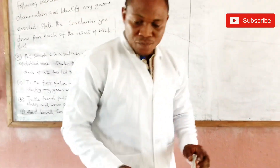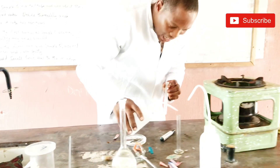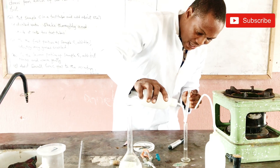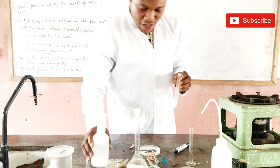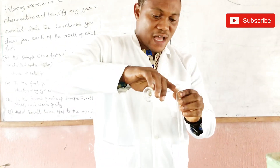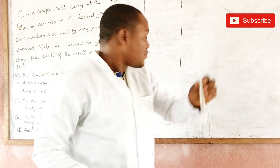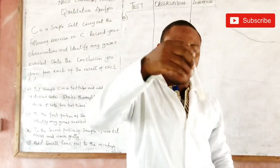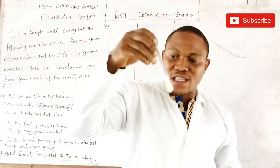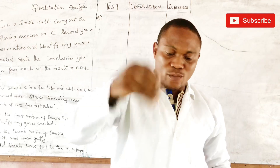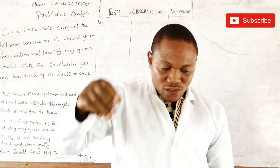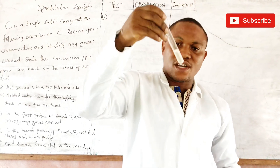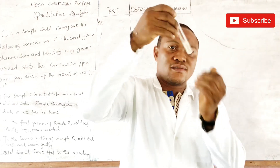I add about five centimetres cubed of distilled water — measuring approximately five centimetres cubed. Then the instruction says to shake thoroughly. For every test you carry out, you must definitely observe something.